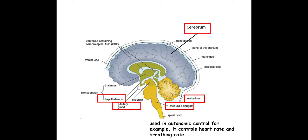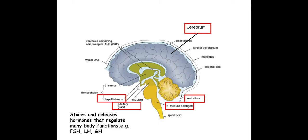The next one is the medulla oblongata, and this one uses autonomic control, for example controlling your heart rate and breathing rate. The pituitary gland is situated in the middle just underneath, and this one is involved with regulating a lot of hormones. Some examples of those are FSH, LH, and GH.